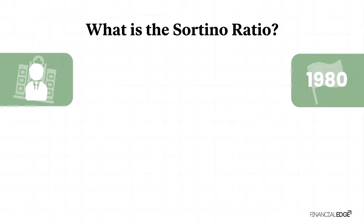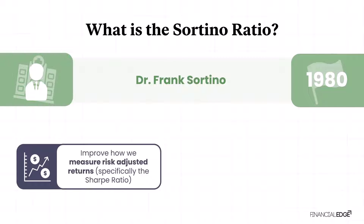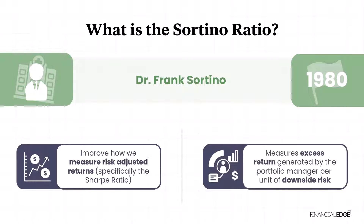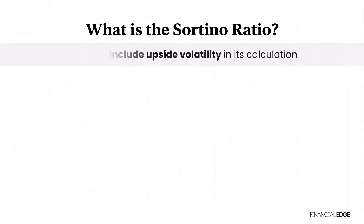Early in the 1980s, Dr. Frank Sortino undertook some research in an effort to improve how we measure risk-adjusted returns, and more specifically, the Sharpe Ratio. He devised a very similar ratio called the Sortino Ratio. Here we're measuring the excess return provided by the portfolio manager per level of downside risk, and that's the critical difference with the Sharpe Ratio — it doesn't include upside volatility in its calculation.